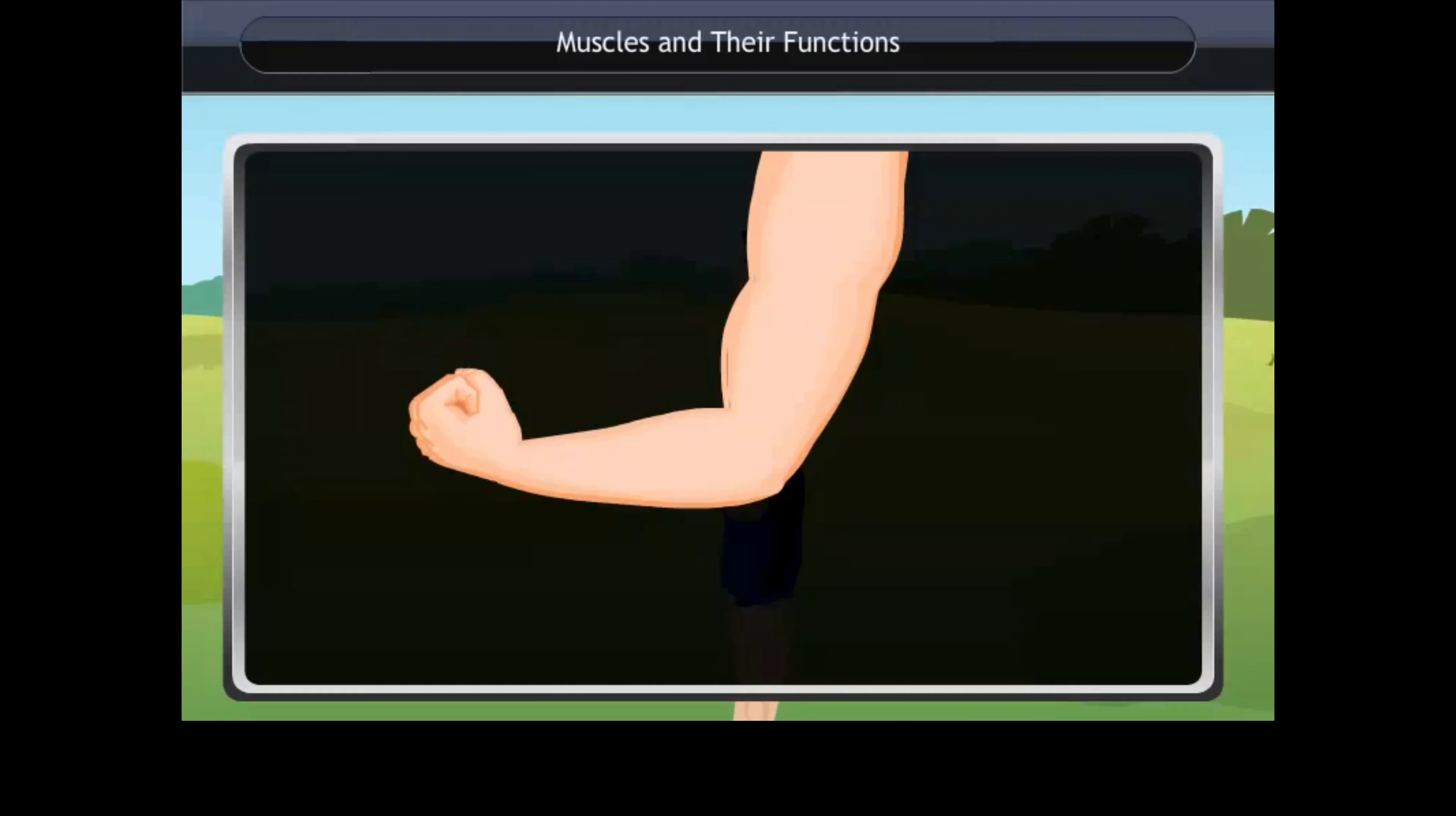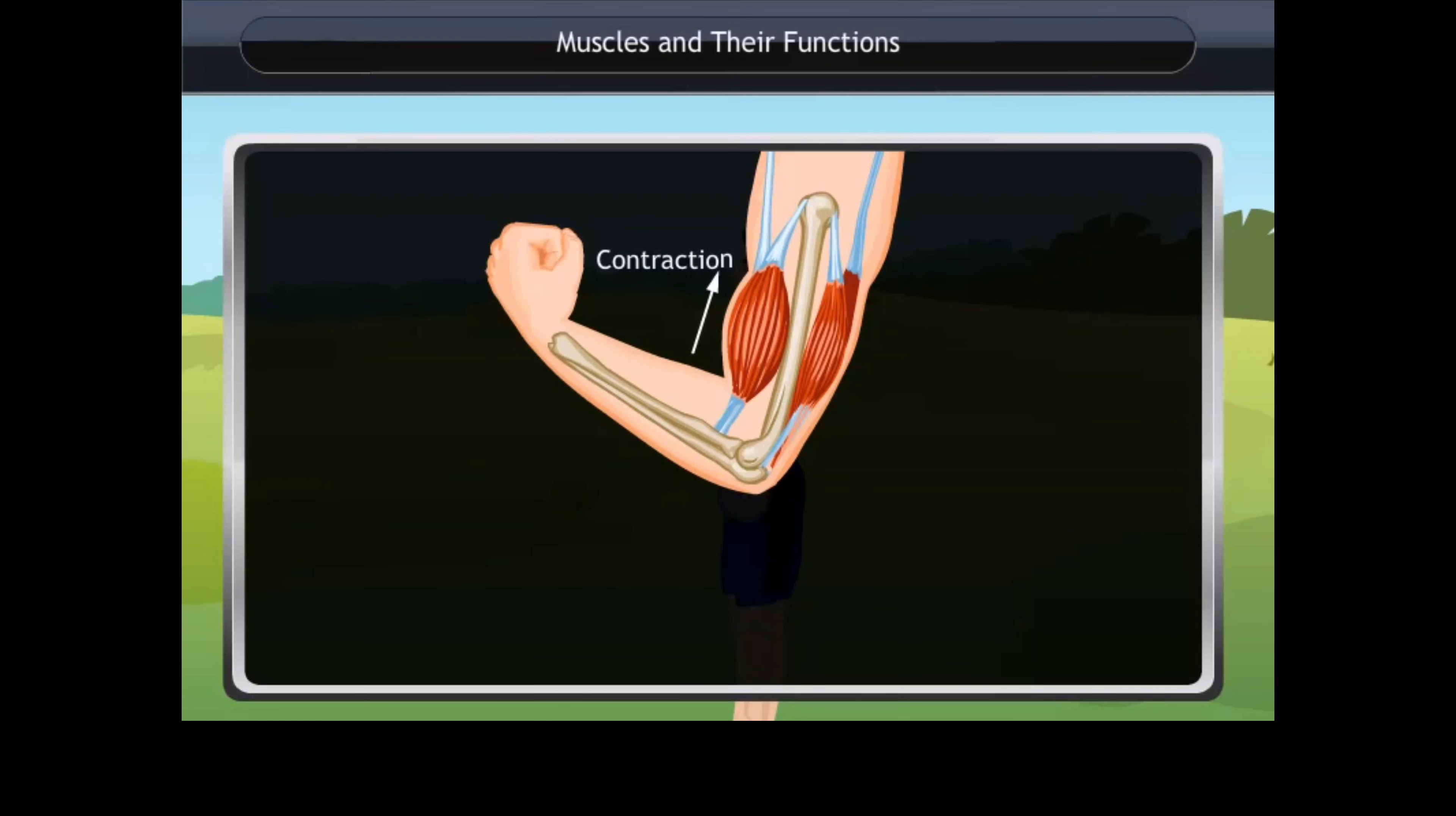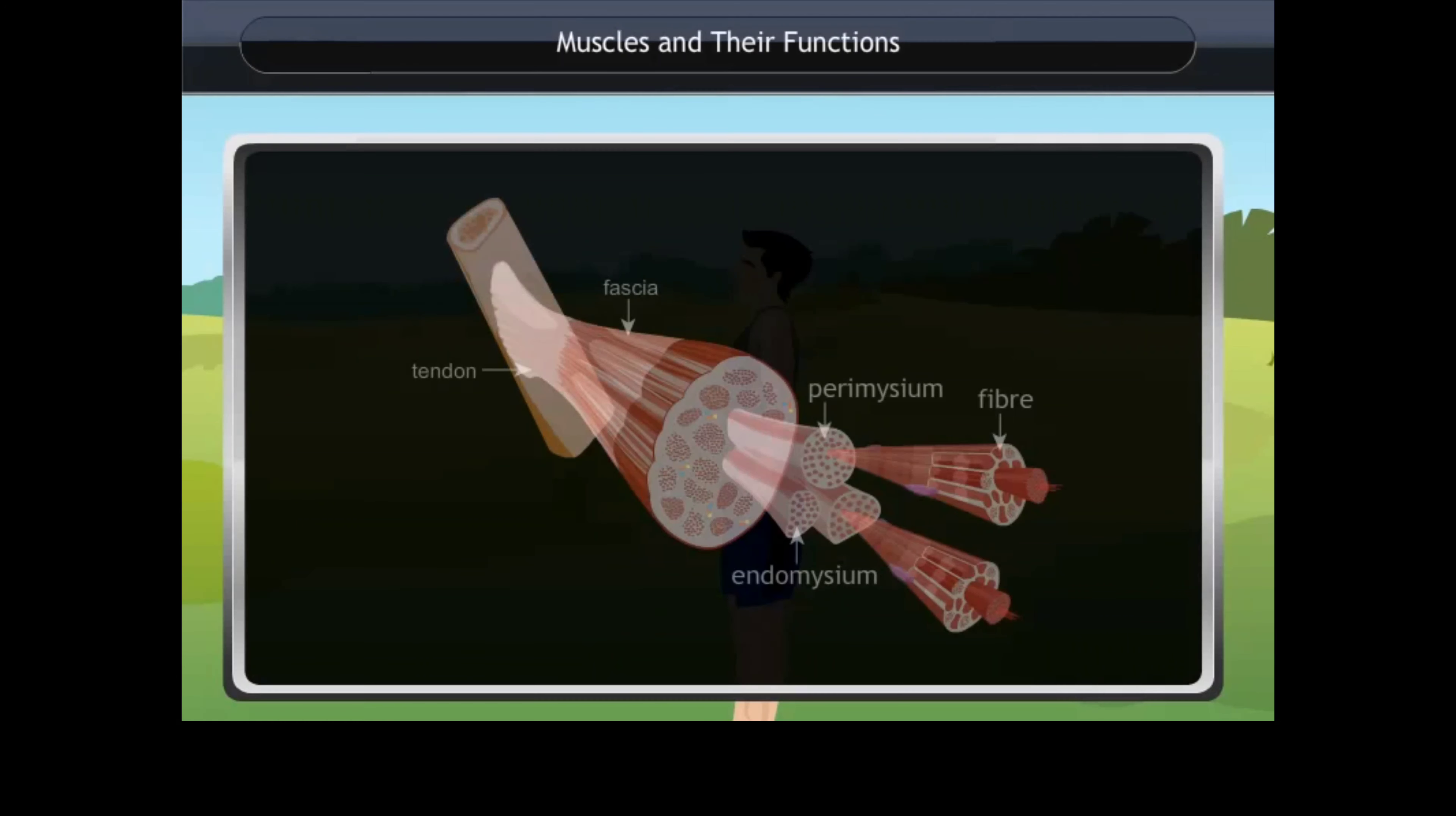Now let us see how these muscles work. They work in pairs. When one of them relaxes, the other muscle of the pair contracts to move the bone in the opposite direction. The relaxed muscle contracts to pull the bone towards its original position while the first relaxes. Thus, two muscles have to work together to move a bone.